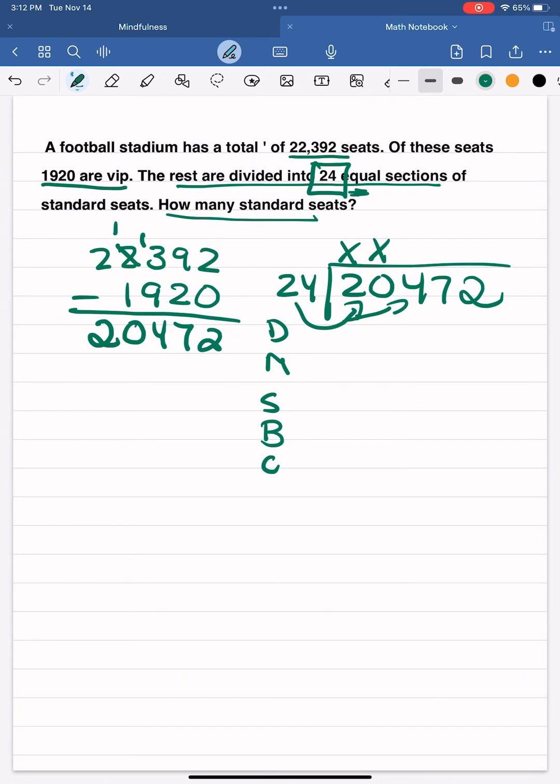24 does not fit into 20. It does fit into 204. I can fit about eight groups of 24. So we'll multiply 8 times 4—that's 32. Carry that 3. And 8 times 2 is 16 plus 3. That will get me 192.